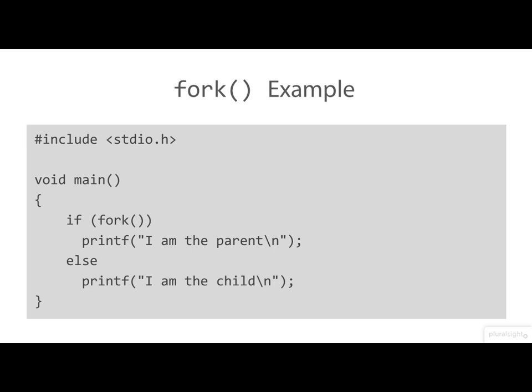Let's have a look at an example here. We see a fork system call in an if test. If the fork returns true, that is to say, non-zero, we print I am the parent. This is the parent process. If the fork returns zero with a child, so we print I am the child. So one process prints I am the parent, the other process prints I am the child.